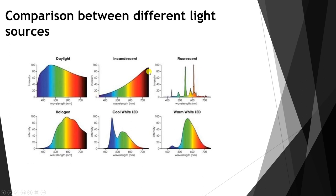For incandescent, red objects can be seen very well but blue objects will not be seen well. Fluorescent performs well at certain colors and drops to near zero at others. Halogen provides a good CRI across certain colors but is poor at others. Cool white and warm white LEDs have their own distributions. In summary, a higher rendering value means higher quality lighting and better visibility of the object's real colors.